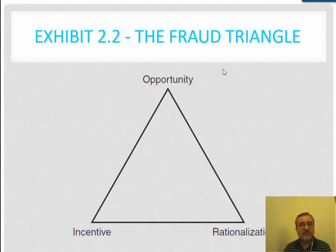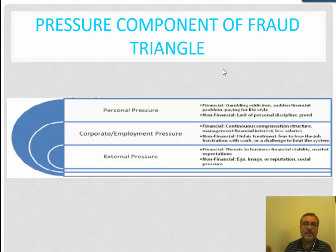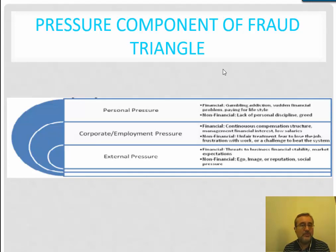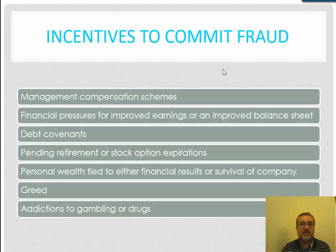The key piece related to opportunity is that this is something management can alter based upon the internal control structure. There are also pressure components of the fraud triangle: personal pressure, corporate or employee pressure, and external pressure. Personal pressure may be a gambling problem; corporate pressure may be senior management threatening termination if results aren't met; and external pressure may come from shareholders demanding outcomes that are realistically unmanageable.